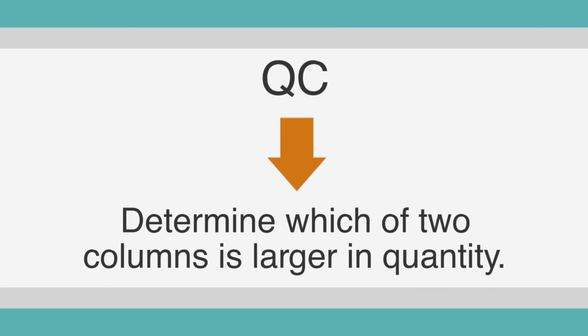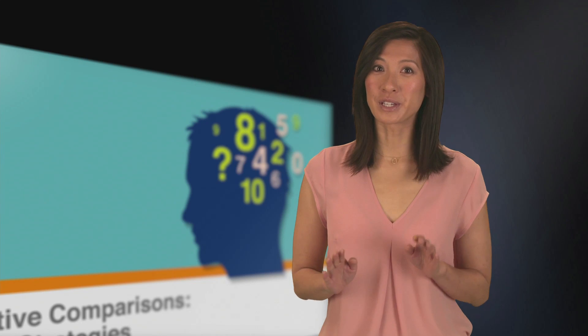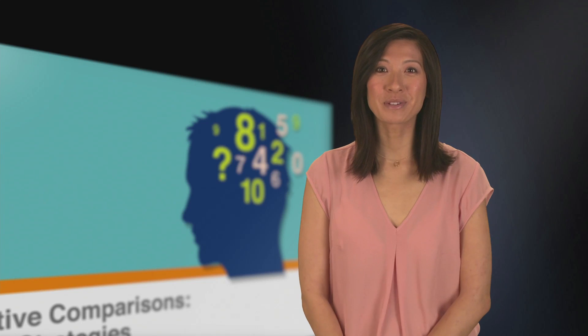The purpose of a QC is not to compute the answer, but to determine which of the two columns is larger in quantity. To understand the basic structure of every QC, let's look at an example you'd see on the test.